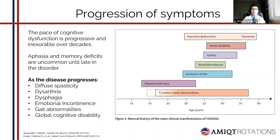Finally, on the bottom of the image, we have T2 white matter abnormalities that increase progressively and become constant by around 35 years of age in all patients. The exact age at early onset is uncertain — that's why the dotted line. But basically, after 35 years of age, all patients present with this type of abnormality.